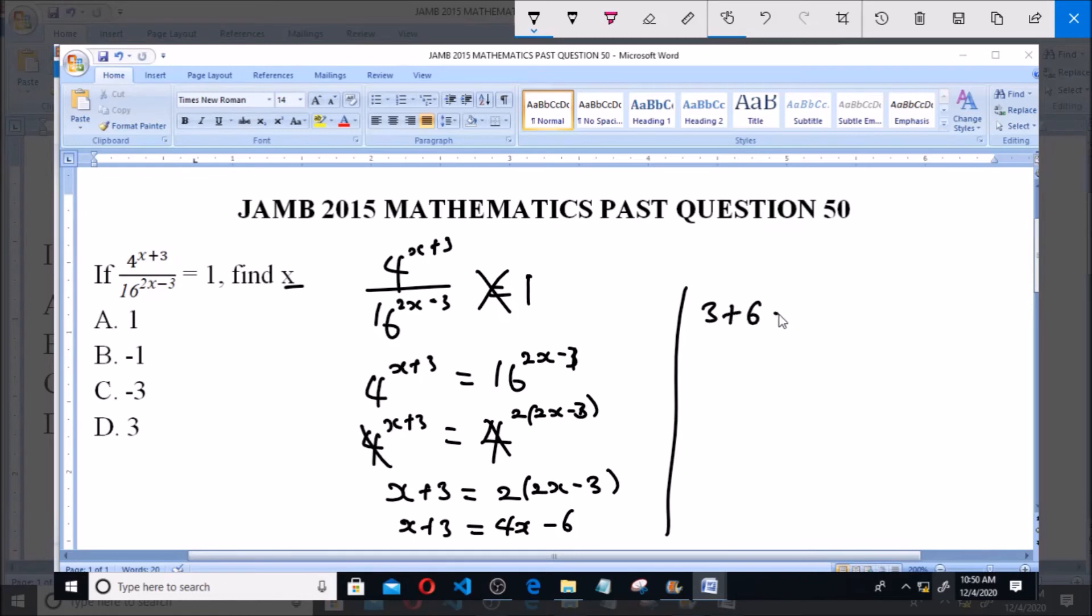So collecting like terms, we'll have 3 plus 6 equals 4x minus x. So 9 equals 3x. Now x will be equal to 9 all over the coefficient of x, which is 3. So x equals 3, and that is option D.